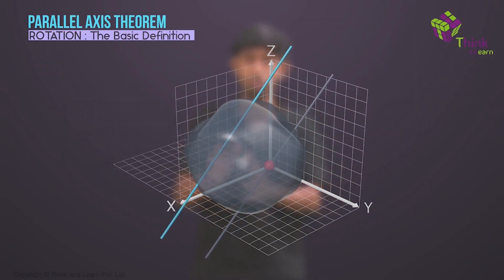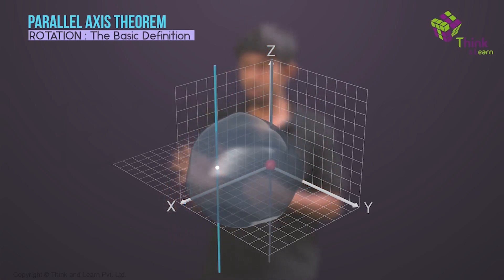And then, without loss of generality, I can align the axis of rotation along the z-axis. In other words, take the z-axis along that particular axis passing through the center of mass.